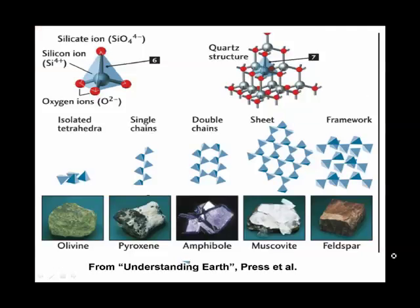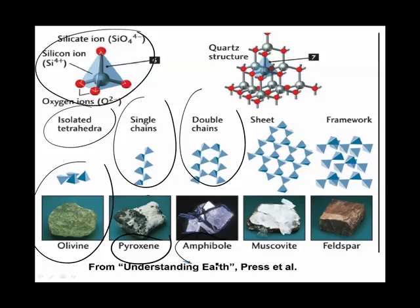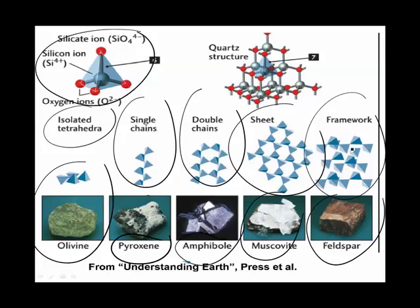Hopefully, the next time you take a look at a textbook and you see something like this, you see that tetrahedron, SiO4, makes sense. We have our isolated olivine, single chain pyroxene, double chain amphibole, sheet muscovite, and framework silicates, feldspar and quartz. And you look at that and say, yeah, that makes sense. If so, I've done my job.